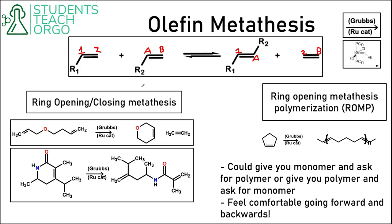If we had R1 and R2 in an intermolecular olefin metathesis — two different molecules reacting together — we would get a mix of products, because R1 could react with R1, or R2 could react with R2. So it's a little bit messy. What's more common is an intramolecular olefin metathesis reaction, and that leads to ring opening and ring closing metathesis.